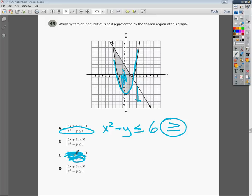For D, same type of thing. It's already greater than, but when I flip it, it's going to be less than, so I'm going to eliminate that.